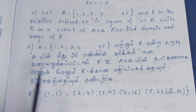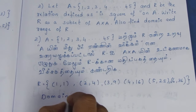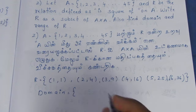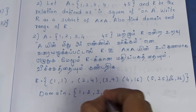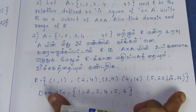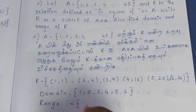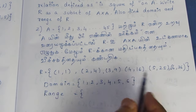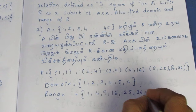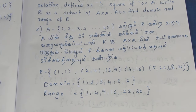Now let's find the domain and the range. Domain is the first value of each pair and range is the second. Domain is 1, 2, 3, 4, 5, 6. Range is the second element — all the elements: 1, 4, 9, 16, 25, 36. So R has its domain and range as listed.